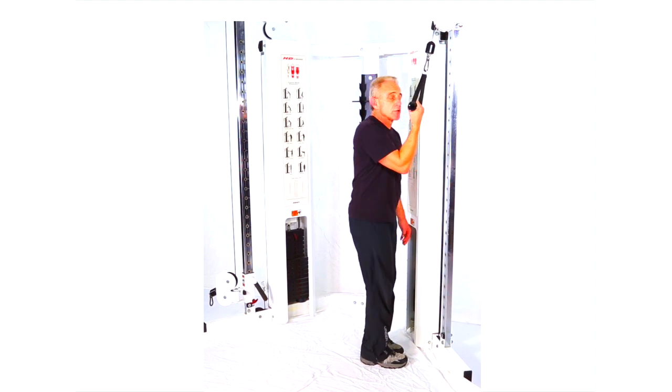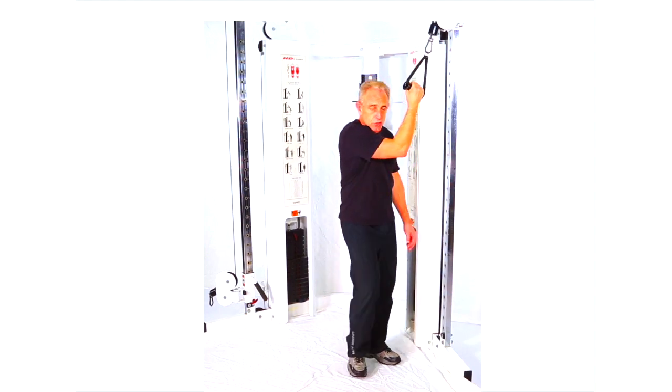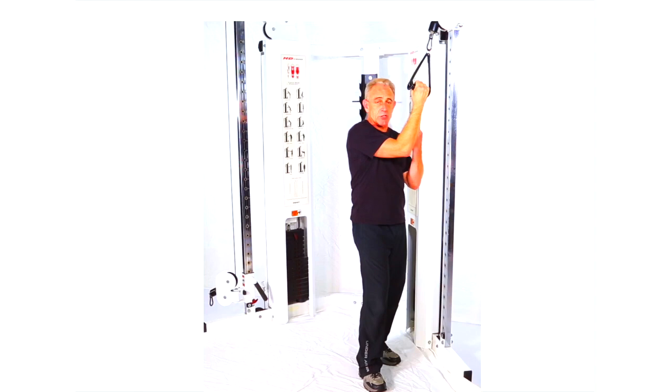And finish your set out. So that's a high cable cross extension, single hand, alternating feet. Here again, make sure you do a set for the other arm to balance the body off.